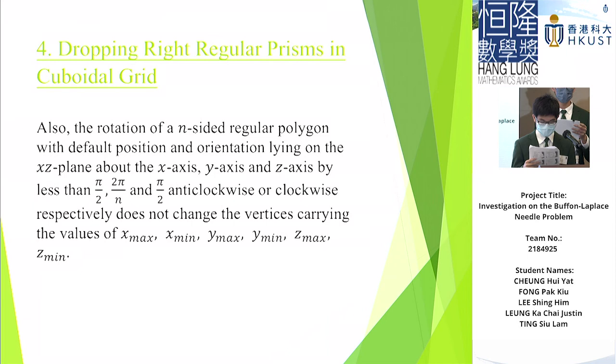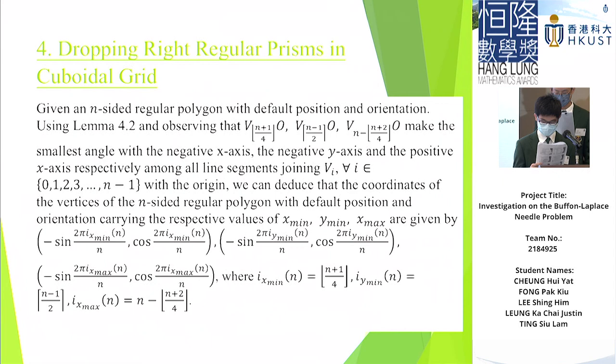Also, the rotation of an n-sided regular polygon with default position and orientation lying on the xz-plane about the x, y, z axes by less than π/2, 2π/n, and π/2 anticlockwise or clockwise, respectively, does not change the vertices carrying the x, y, z extrema.